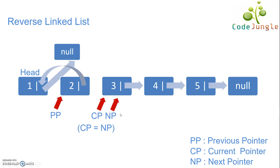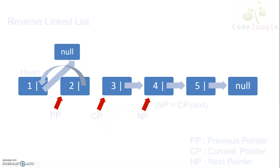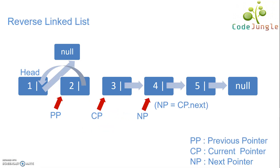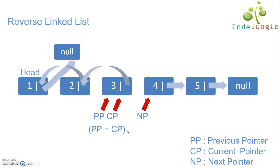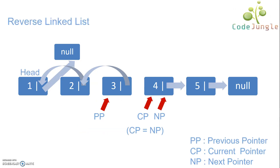Coming to the third iteration, as current pointer is not equal to null, the next pointer will again point to the current pointer's next node, and current pointer's next will point to the previous pointer. As a conclusion after the third iteration, the third node is pointing to its previous node which is node 2, and the third node is no more pointing to the fourth node.